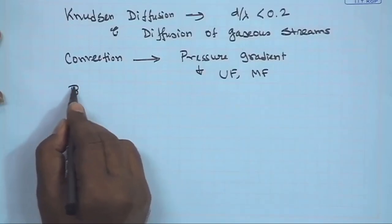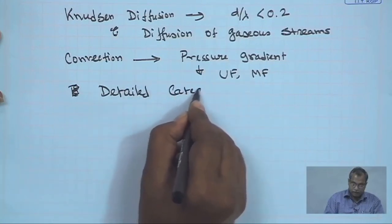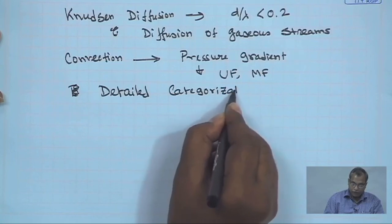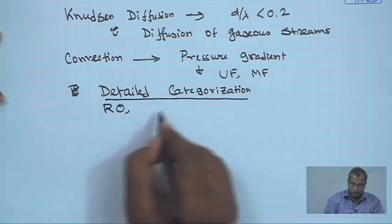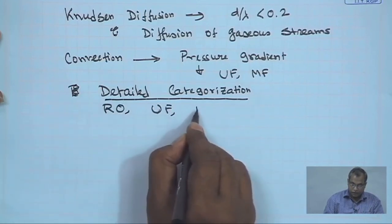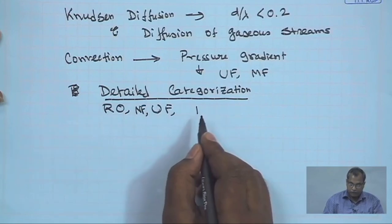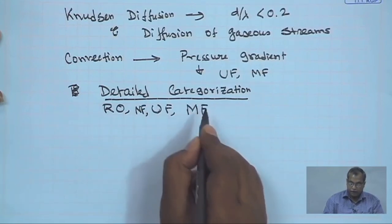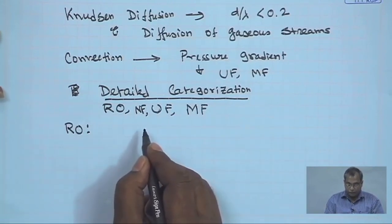Once we understand the different transport mechanisms involved in membrane-based processes, let us categorize these processes broadly and in detail. There are mainly four processes we will be dealing with: reverse osmosis, nanofiltration — which is in between reverse osmosis and ultrafiltration — ultrafiltration, and microfiltration. Let us go and see the characteristics of each of these processes in detail.